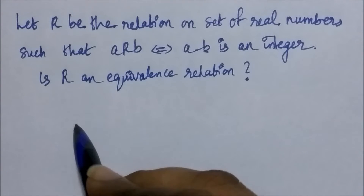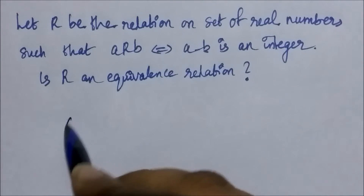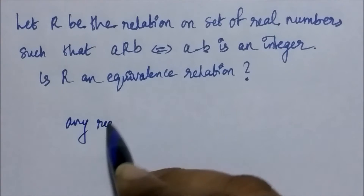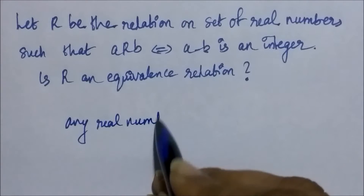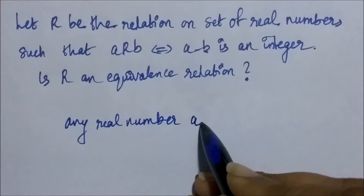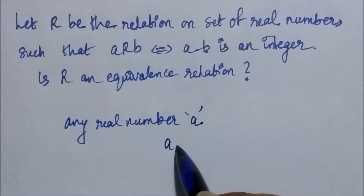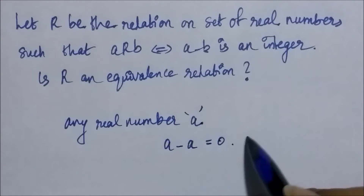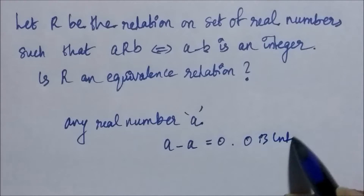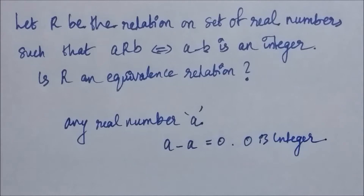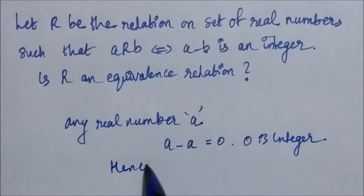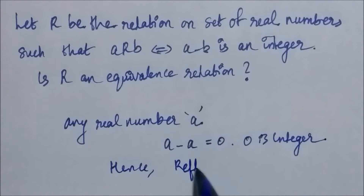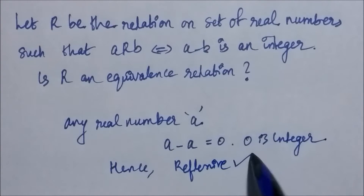Let's see. If you take any real number A, A minus A is going to be 0. Zero is an integer, so A is related to A. This holds for all A, and hence the relation is reflexive.